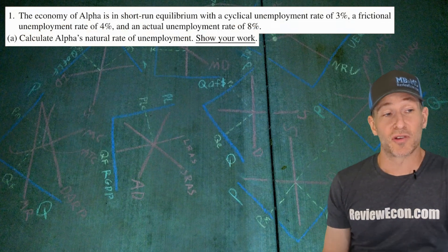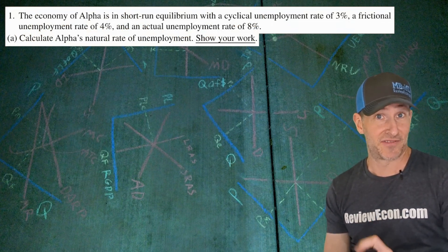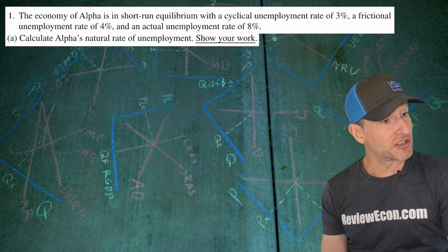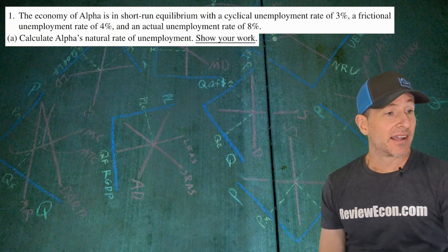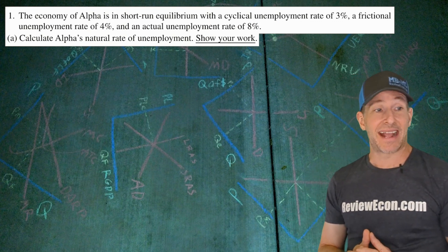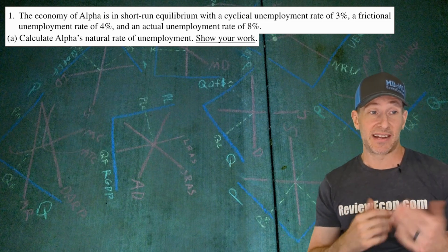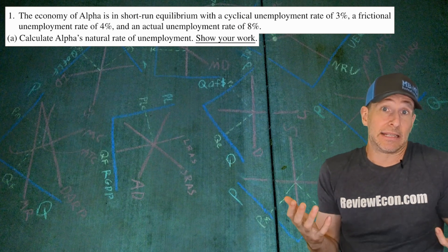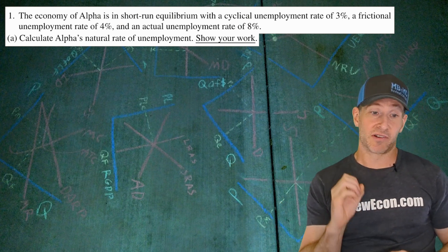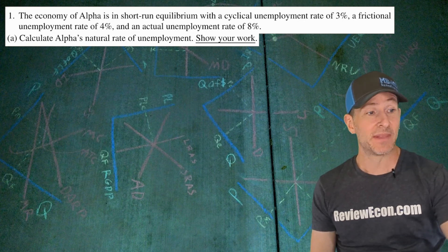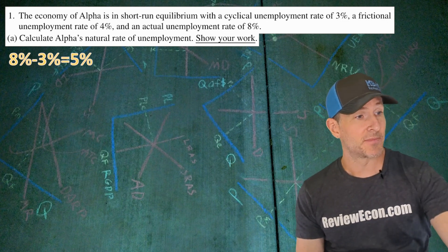The economy of Alpha is in short-run equilibrium with a cyclical unemployment rate of 3% — that means they have a recessionary gap — a frictional unemployment rate of 4%, and an actual unemployment rate of 8%. We're going to calculate Alpha's natural rate of unemployment and show our work. The difference between the actual unemployment rate and the natural rate is the cyclical unemployment rate, because when they're at the natural rate of unemployment, cyclical is zero. So we take the actual unemployment rate and subtract the cyclical rate, and that gives us the natural rate of 5%.